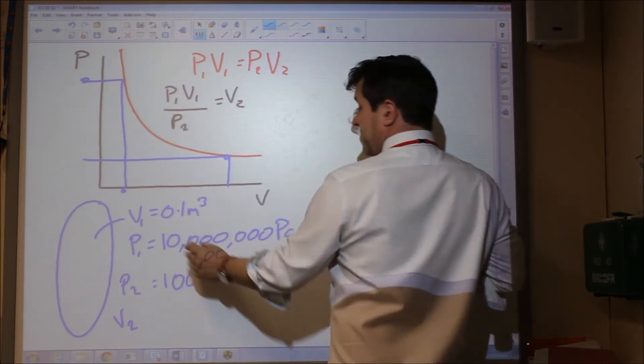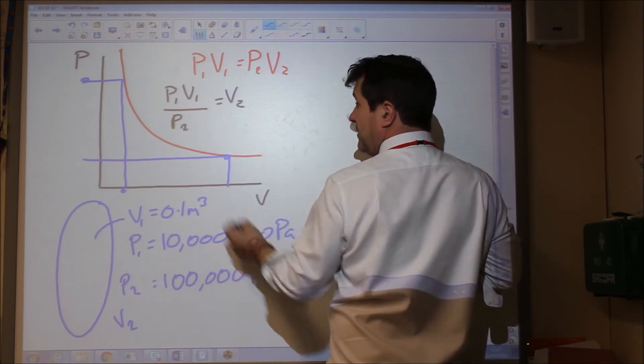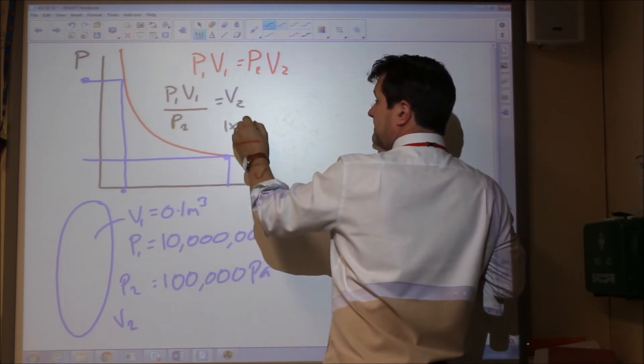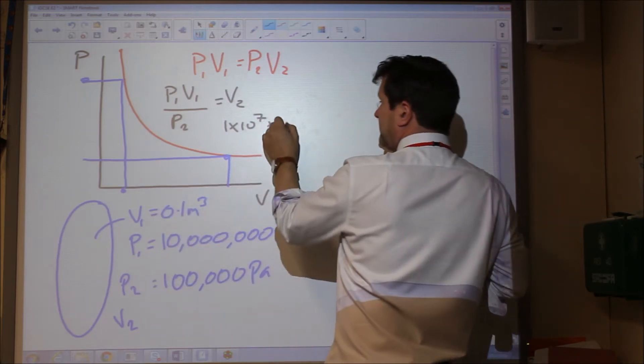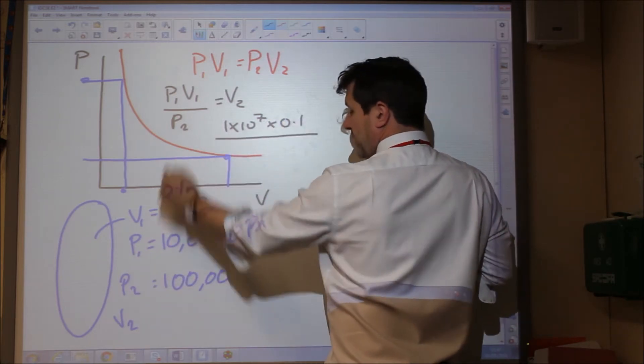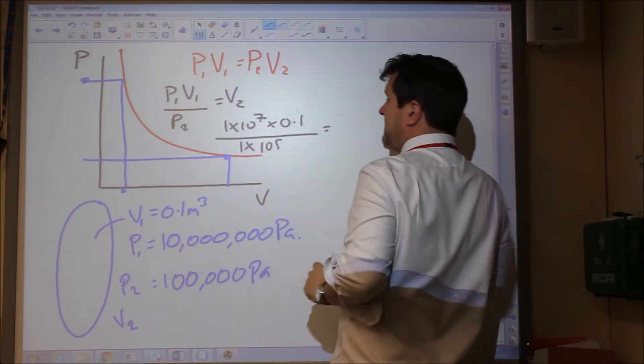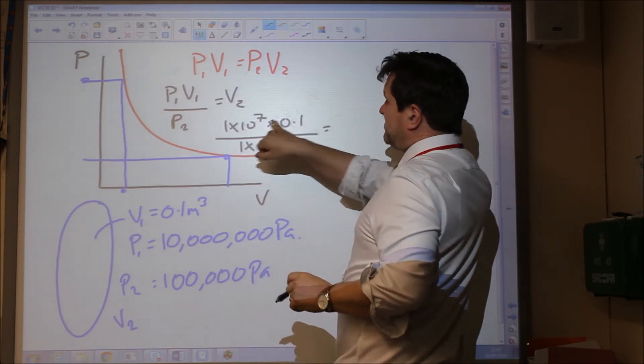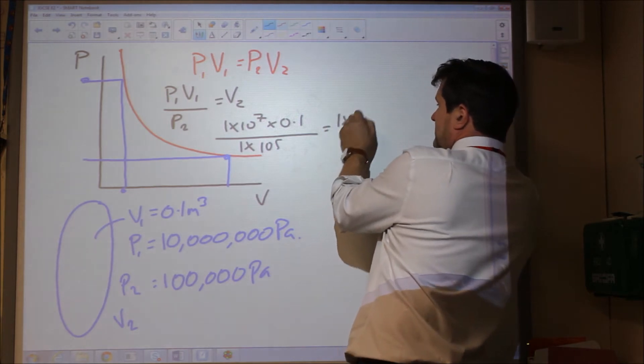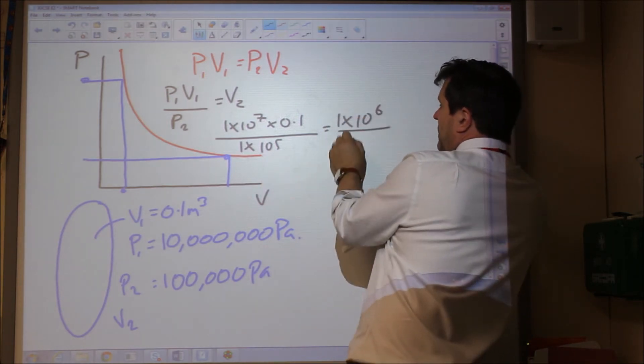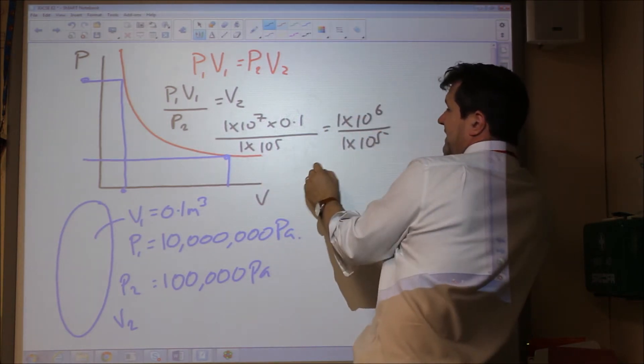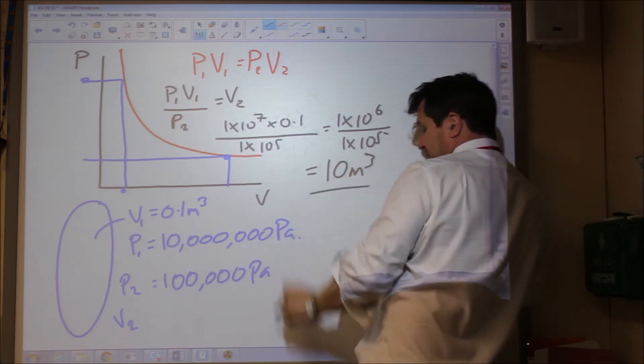If we're trying to find V2, we could rearrange the equation and say P1 V1 divided by P2 equal V2. So that would be 1 with 7 noughts times 0.1 divided by 1 with 5 noughts, and this means we've actually got 1 times 10 to the 6 divided by 1 times 10 to the 5 and that would equal 10 metres cubed.